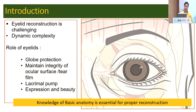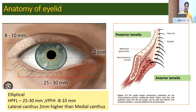Knowledge of basic anatomy is very essential for proper reconstruction of the eyelid. The eyelid is an elliptical structure with a horizontal fissure height. The fissure length is 25 to 30 mm, and the vertical palpebral fissure height is around 8 to 10 mm.